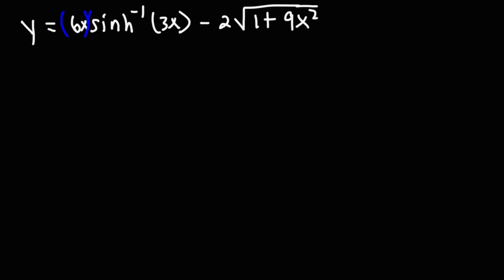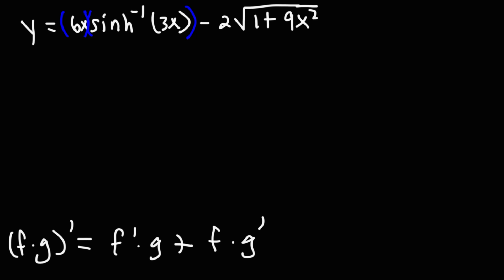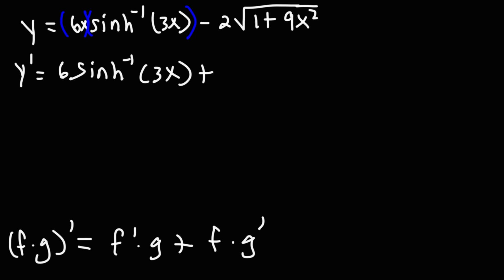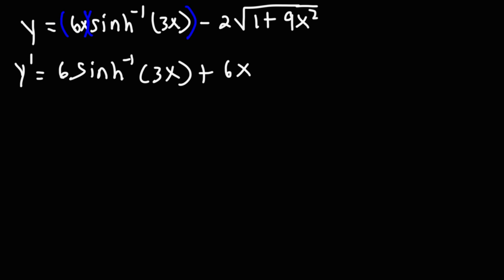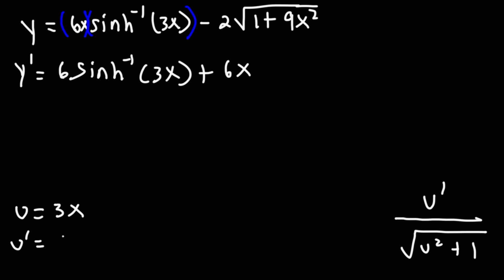For this portion we have a product rule problem. The derivative of fg is the derivative of the first part times the second, plus the first part times the derivative of the second part. The derivative of the first part, 6x, is just 6; we keep the second part, inverse hyperbolic sine of 3x, the same. Then we keep the first part, 6x, and differentiate the second part using the formula u prime over the square root of u squared plus 1. Here u equals 3x and u prime equals 3, so this becomes times 3 over the square root of 3x squared plus 1.